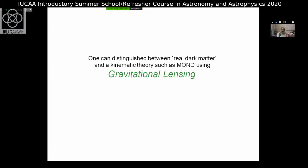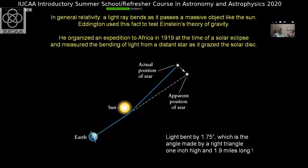The physics used to resolve this dilemma was gravitational lensing. One can distinguish between real dark matter, which clusters, and a kinematic theory such as MOND using gravitational lensing. Almost 100 years ago, Eddington organized an expedition to Africa to see the deflection of light from a star grazing the sun, finding the beautiful deflection predicted by General Relativity — this made Einstein very famous. All matter, dark and luminous, will bend light.